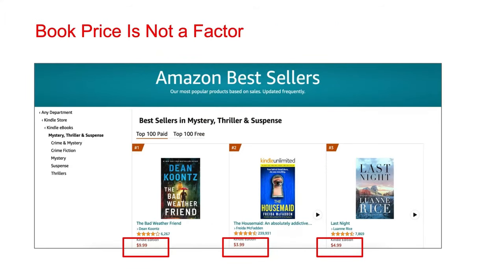Though the number of sales a book makes is a factor in bestseller rankings, the price of the book is not, as long as the book isn't free. Books that are free go on their own bestseller list. The primary bestseller lists on Amazon are for paid books. As you can see here, the top three books in this category have different prices. Ten sales of a book for $3.99 count just as much as ten sales of a $9.99 book. An author would be making more money with ten sales for $9.99, however in terms of bestseller ranking determination, price is not a factor.